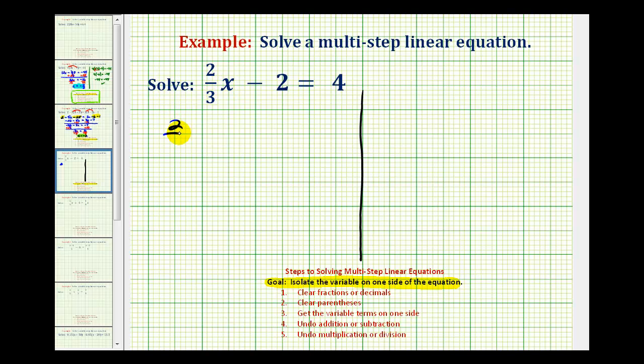So we have two-thirds x which means two-thirds times x minus two equals positive four. To isolate the variable x on the left side we have to undo this multiplication and undo this subtraction. We always want to undo the addition or subtraction first before we undo any multiplication or division. The opposite of minus two is plus two so we'll add two to both sides of the equation.